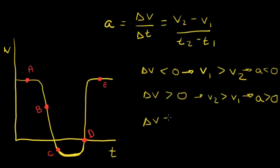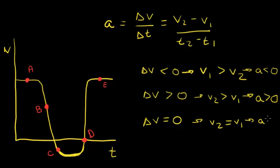Finally, when our change in velocity equals zero, our final velocity equals our initial velocity, meaning that the velocity is not changing — for example, going from five meters per second to five meters per second within the same time frame. In this case, the acceleration equals zero. Note that this doesn't mean that an individual value of velocity is greater than, less than, or equal to zero; it means the overall change in velocity is what we're interested in.